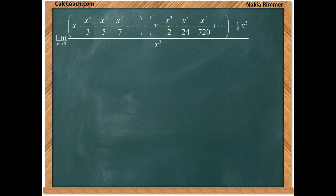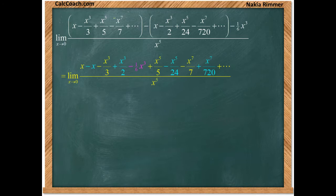Putting the terms next to each other, we have the x from arctan, the minus x from x cosine x, the minus x cubed over three from arctan, the plus x cubed over two from x cosine x. There's one more cubic, the extra term that was thrown on the end of the numerator, minus one-sixth of x cubed. Then we have fifth degree, x fifth over five from arctan, minus x fifth over twenty-four from x cosine x. Two x seventh terms, two x ninth terms. Basically we'll have something that looks like this.